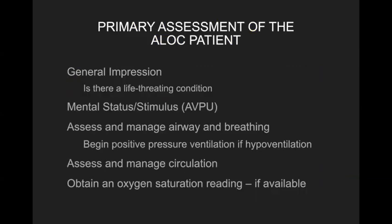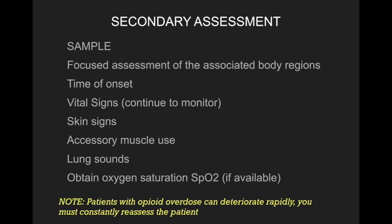Your primary assessment will typically reveal some type of altered level of consciousness, because opioids act on the CNS and depress people — they'll be slower to respond, with slower breathing, pale, cool, clammy skin. We're looking immediately for life-threatening conditions, using the AVPU scale: alert, verbal, painful stimulus, and unresponsive. If the patient is not breathing properly, start positive pressure ventilation, give oxygen, and attain oxygen saturation. Then assess and manage circulation by checking carotid and distal pulses.